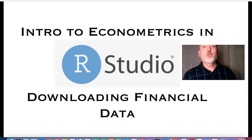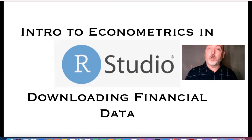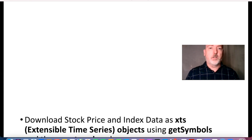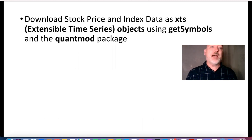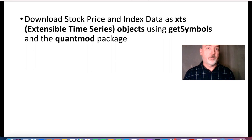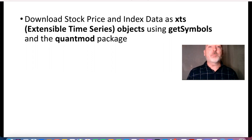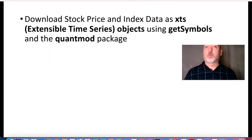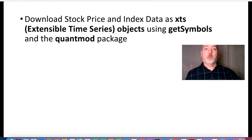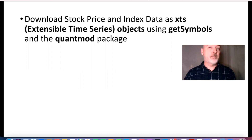Just getting started with econometrics or moving into time series analysis and financial econometrics — this will be enough to get us started. We're going to go through how to download stock price and index data using a ticker symbol for an individual firm and an index like the S&P 500, downloading those as extensible time series objects within the R Studio framework. That sets us up for more advanced time series analysis, forecasting, and autoregressive moving average models. We'll be using the quantmod package and specifically the getSymbols command.